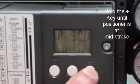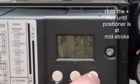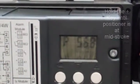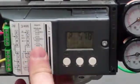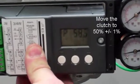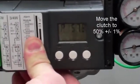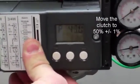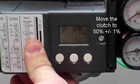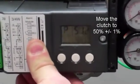Hold the plus key until the positioner is at mid stroke. Move the clutch to 50% plus or minus 1%.